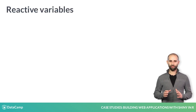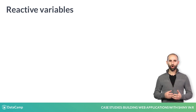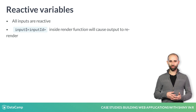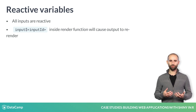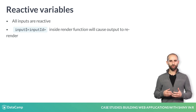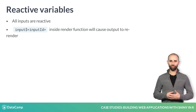Only reactive variables behave this way. And in Shiny, all inputs are automatically reactive. That is why you can always use input$inputID inside render functions, and you can be sure that whenever an output depends on this input, it will use the most up-to-date value whenever the input changes.